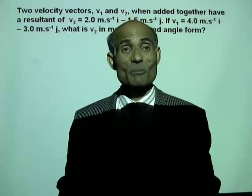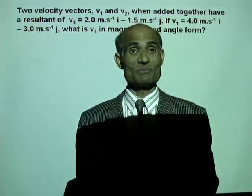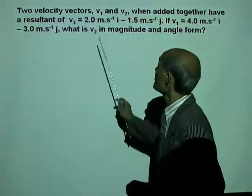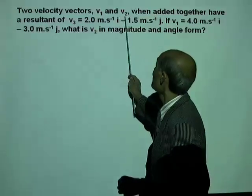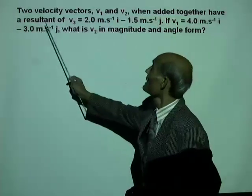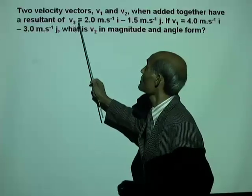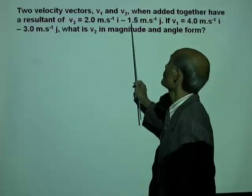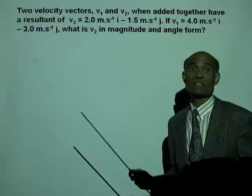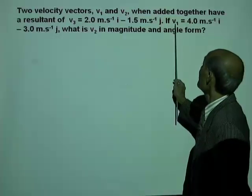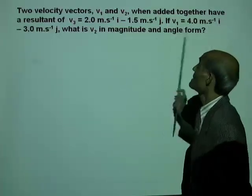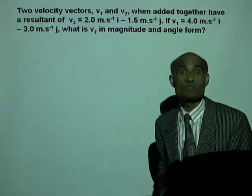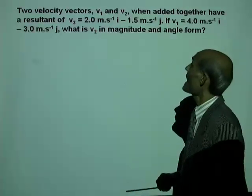We continue our study of vectors by solving more problems. Two velocity vectors V1 and V2, when added together, give a resultant V3 equal to 2 m/s i minus 1.5 m/s j. If V1 is 4 m/s i minus 3 m/s j, what is V2 in magnitude-angle form?